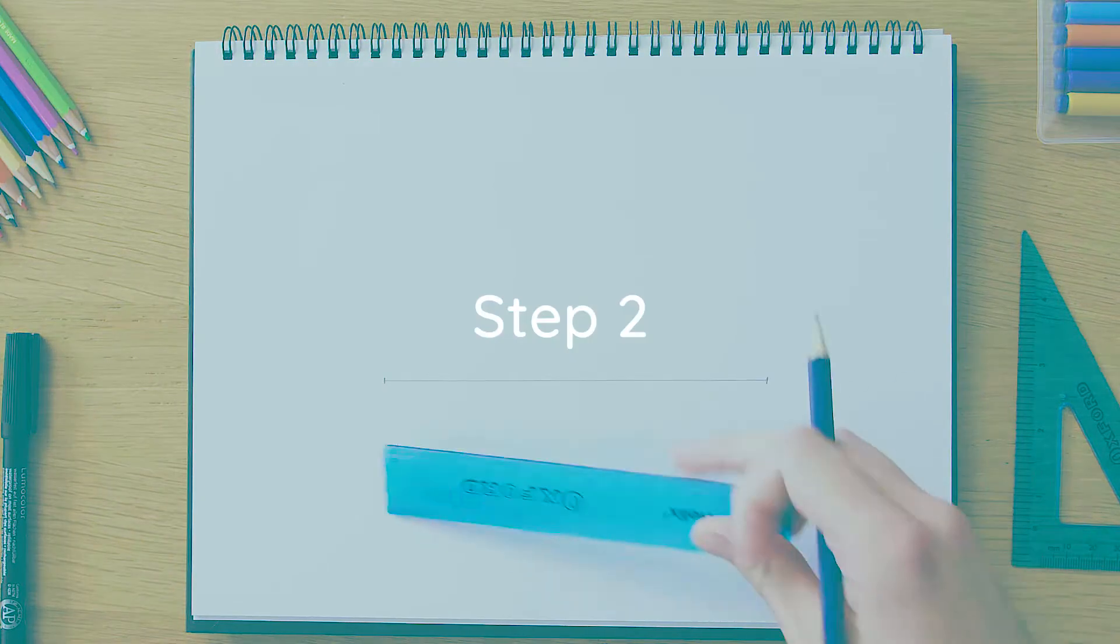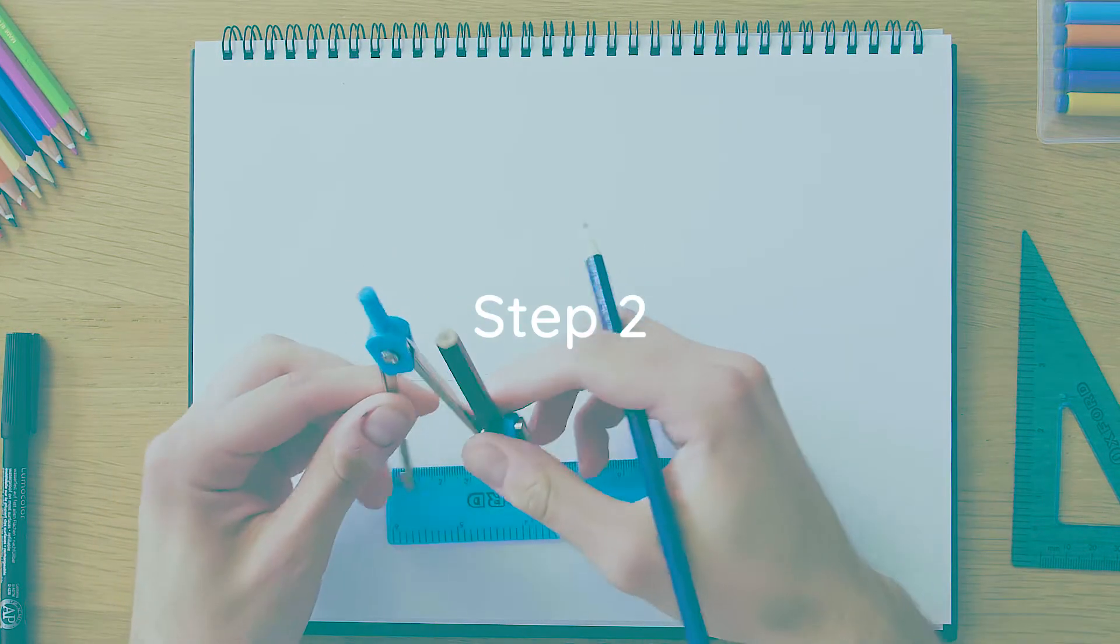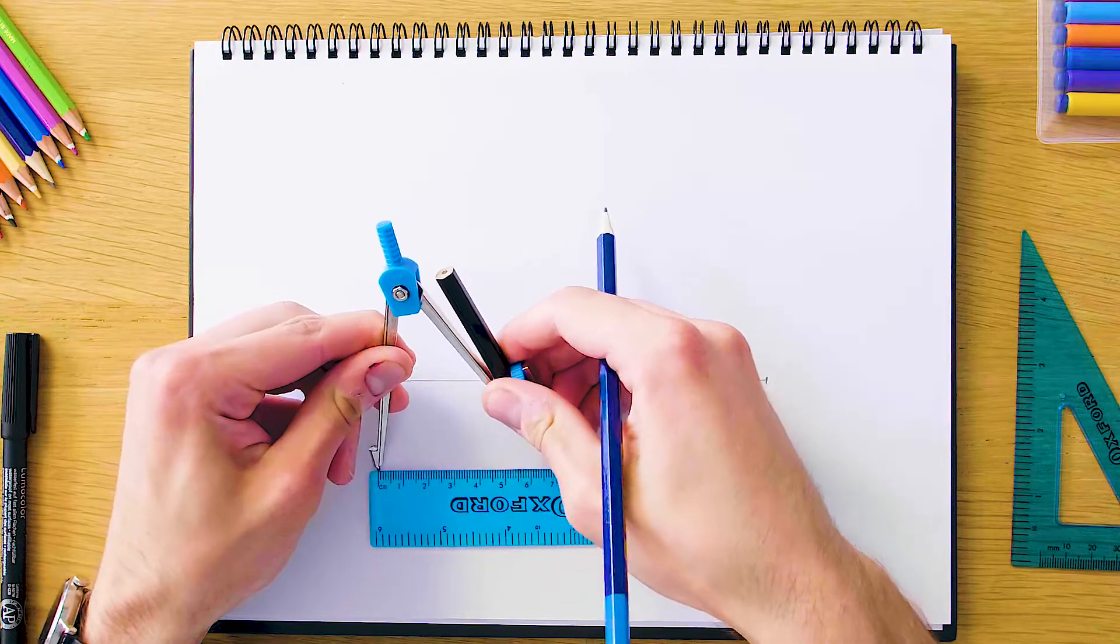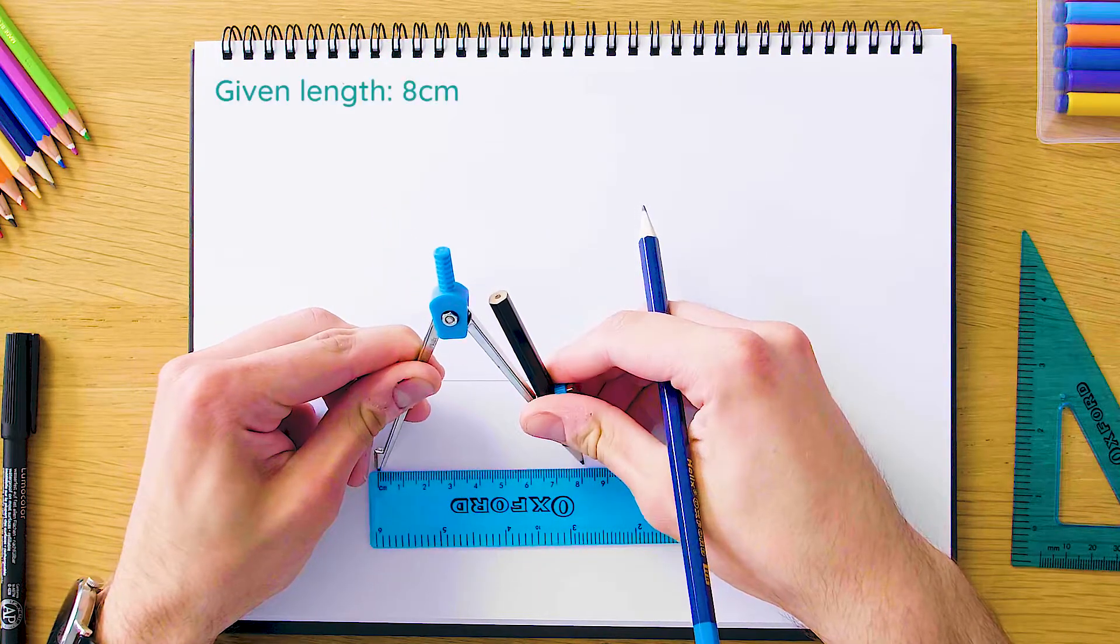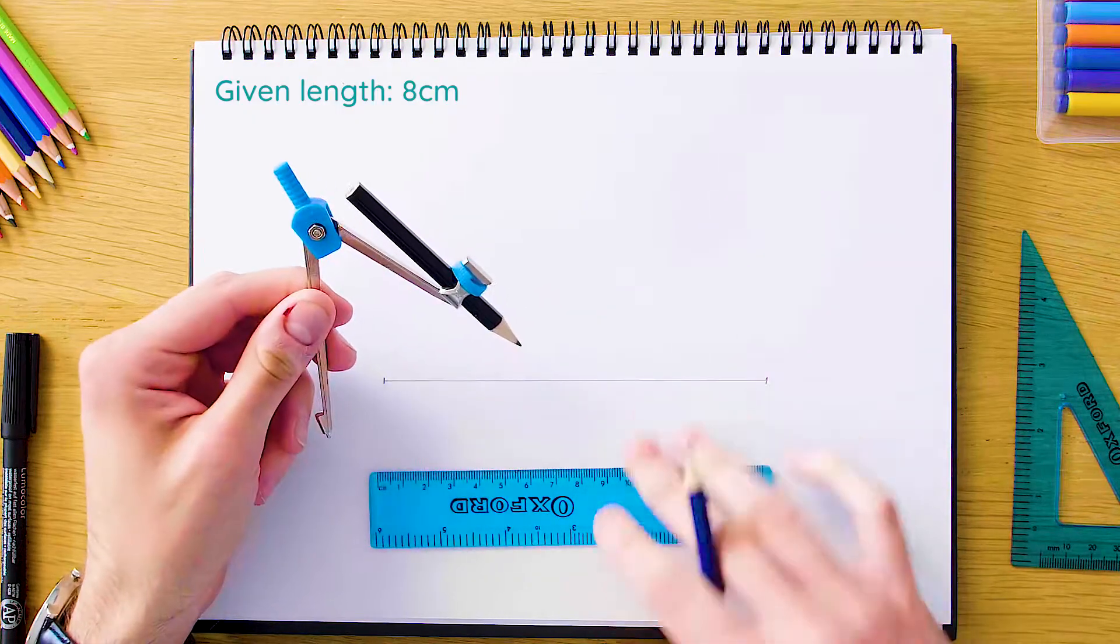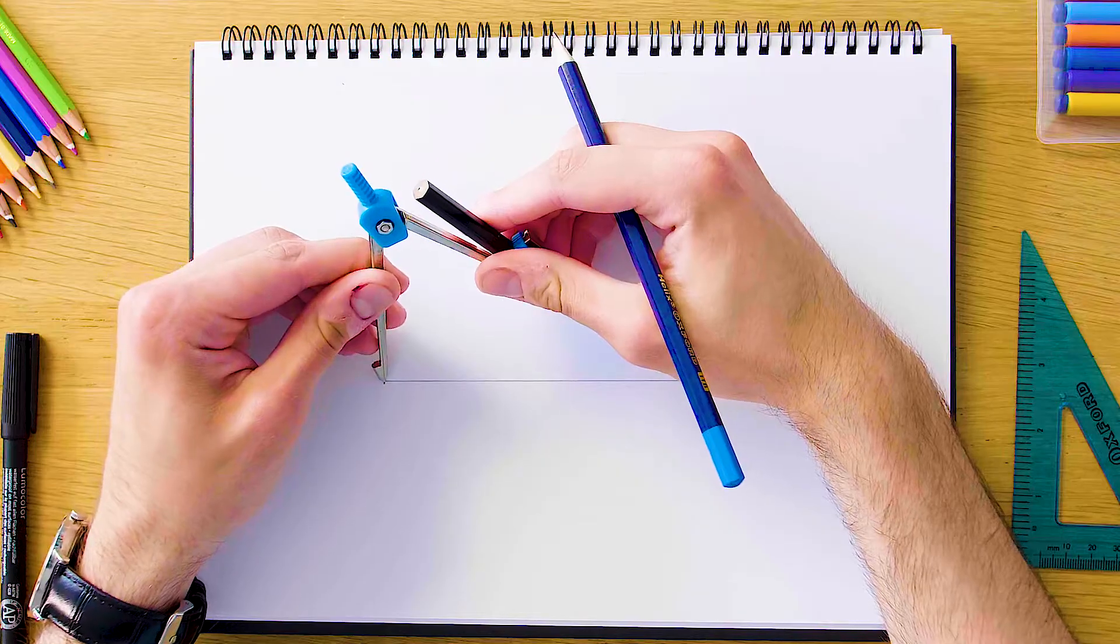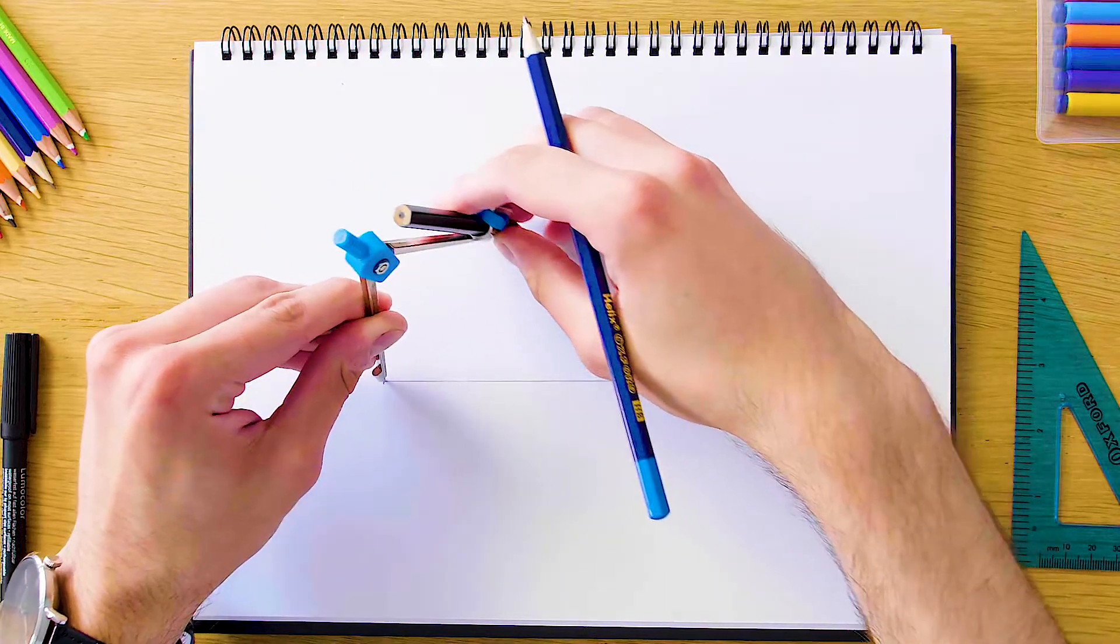The next step is to set our length using the compass on our ruler. We'll use the compass to set 8 and make sure it's pretty much exactly 8, and then we're going to swing this arc up above the triangle.